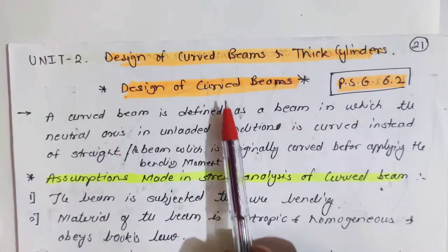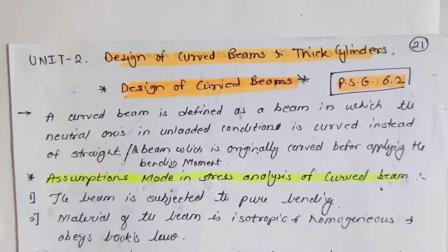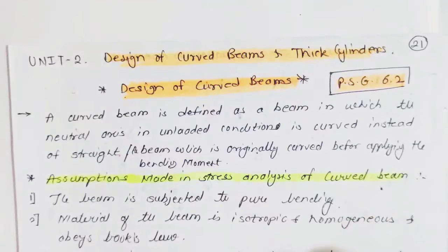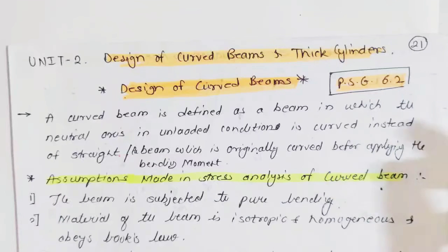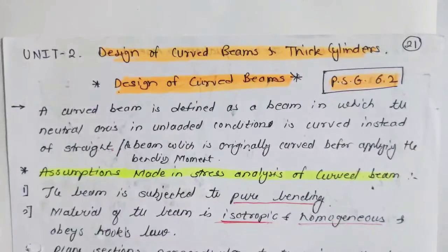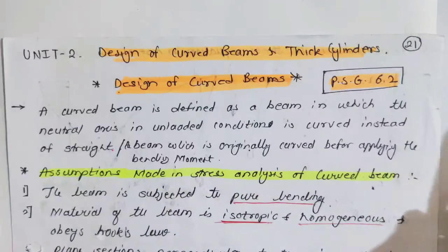Before going to the definition of curved beam, I would like to give some examples of curved beams. The first example is a C-clamp — we have already seen the design of C-clamp, and we know its body is in a curved shape. Other examples include crane hooks, rings, bracelets, U-frames, chains, and frames of presses.